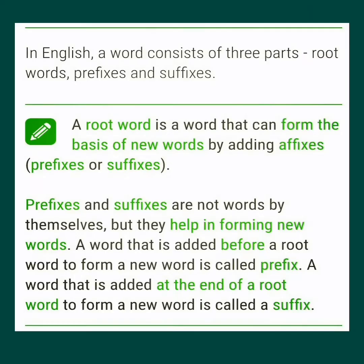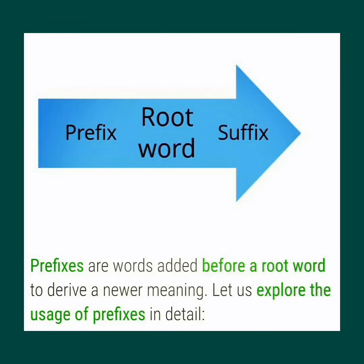In English, a word consists of three parts: root words, prefixes, and suffixes. A root word is a word that can form the basis of new words by adding affixes — that is, a prefix or suffix. The prefixes and suffixes are not words by themselves, but they help in forming new words. Look at the arrow mark: the root word is in the middle, at the front we are adding a prefix, and at the back we are adding a suffix.